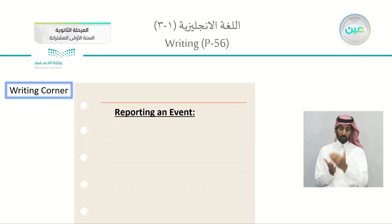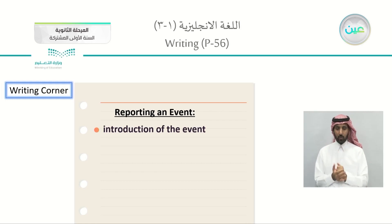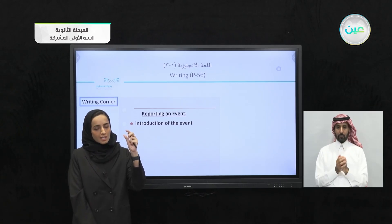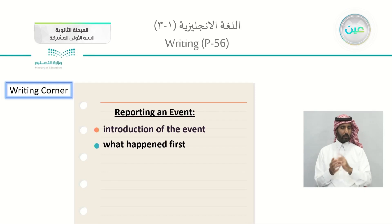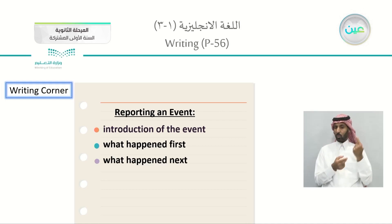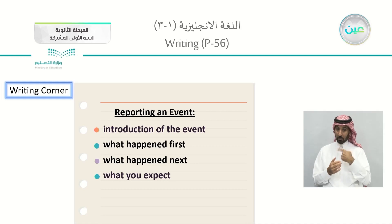When you're reporting an event, at the beginning you will introduce the event — what happened. Are you reporting a party, celebration, or something bad? Then tell me what happened: what happened first, followed by what happened next. Follow chronological order — tell the older first, then the newer. Then, what you expect: do you expect the reader to come visit, to see you, or are you not expecting them to come?